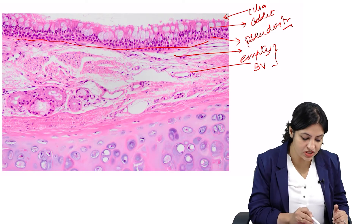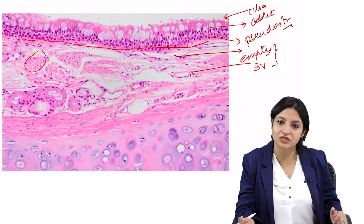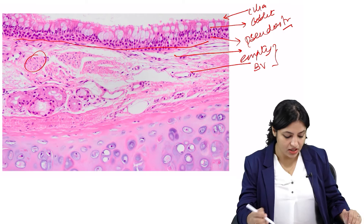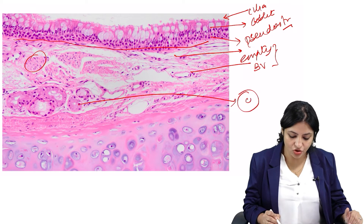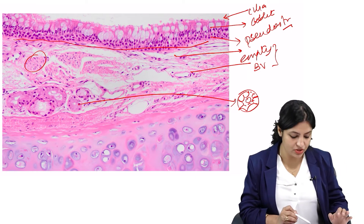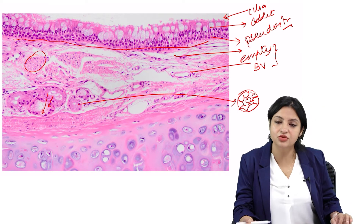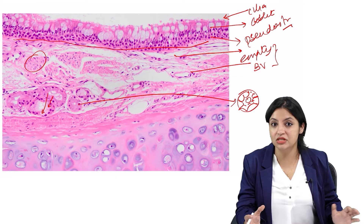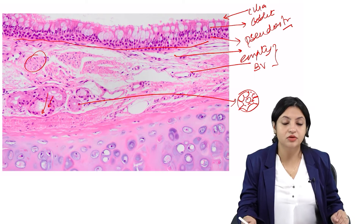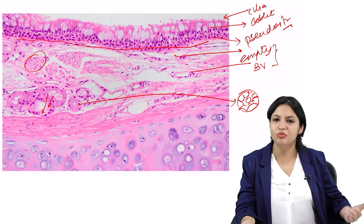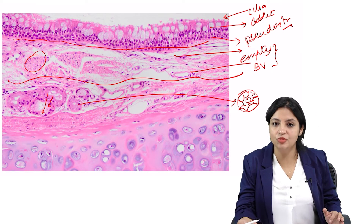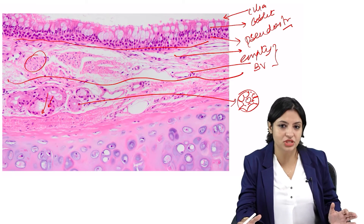Then you can see a cut section which is actually muscle — that's how muscle looks. So here we can see epithelium, lamina propria, and muscle, so the mucosa is complete. Now I'm seeing some glands here with a lumen filled with granules and vacuolated spaces — filled with mucus. These are seromucinous submucosal glands, present below the mucosa.